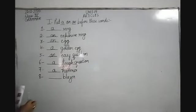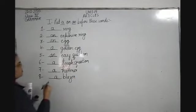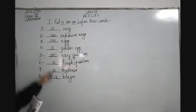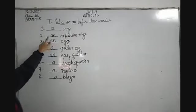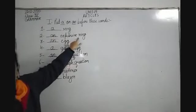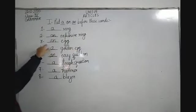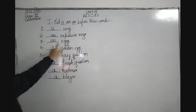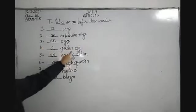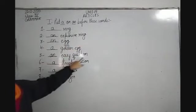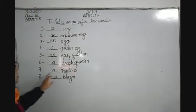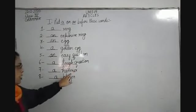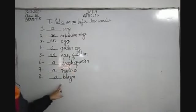Let's revise: first — A ring; second — AN expensive ring; third — AN egg; fourth — A golden egg; fifth — AN easy question; sixth — A tough question; seventh — A hammer; eighth — A blazer.